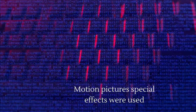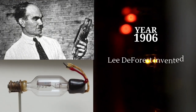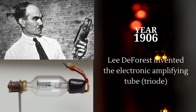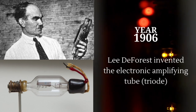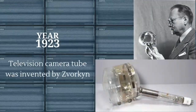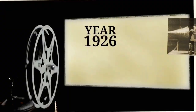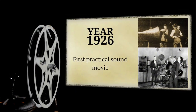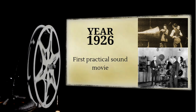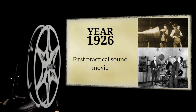In 1906, Lee De Forest invented the electronic amplifying tube, or the triode. In 1923, the television camera tube was invented by Zvorykin. In 1926 was the incorporation of sound to films, giving it life. These were called sound films.